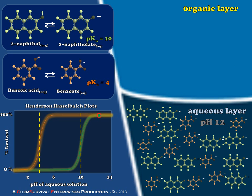So at pH 2 everything accumulates in the organic layer, and at pH 12 everything accumulates in the aqueous layer — both are suboptimal choices for extracting these two compounds from each other. But with an understanding of the Henderson-Hasselbalch plot and how ionization affects solubility of organic compounds, I can choose the proper aqueous layer pH, which would be around pH 7. That's it for now — we'll do an even more complicated example next time.